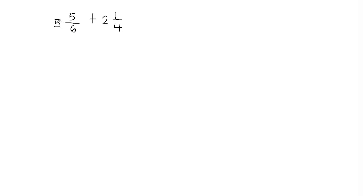So let's first multiply the whole number with the fraction's denominator. 5 times 6 will give me 30, and 30 plus 5 is going to give me 35. So my numerator is going to be 35 over 6. The numerator is 35 and the denominator will still remain the same — we're not going to change the denominator.